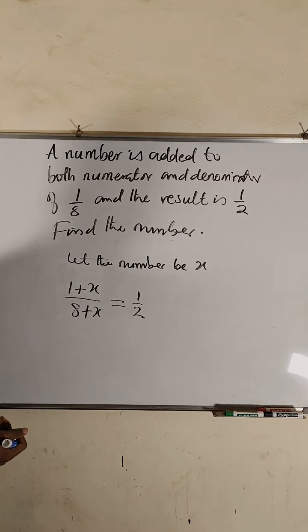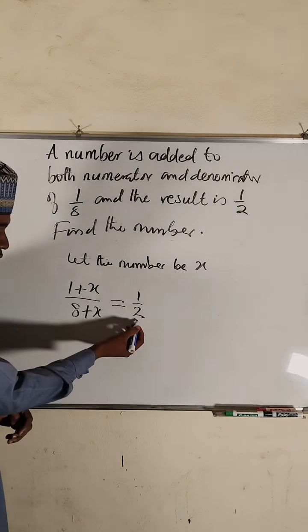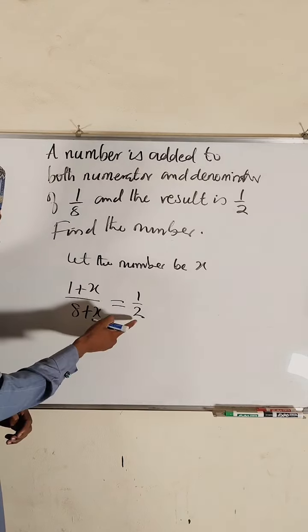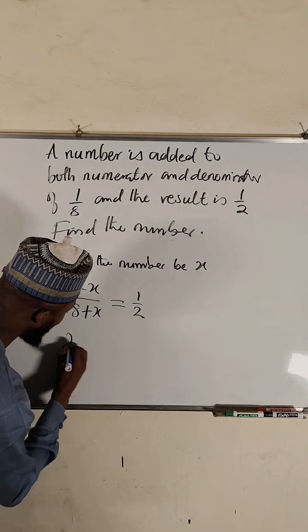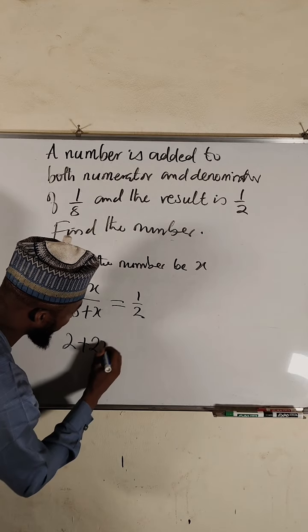Let's solve this problem. I think we can cross multiply. We take two and multiply by the whole of these: two times one plus two times x, that is two plus two x.